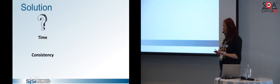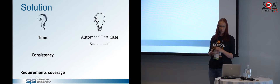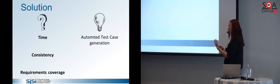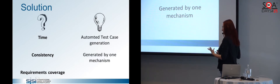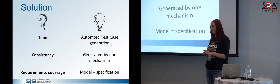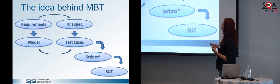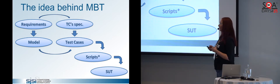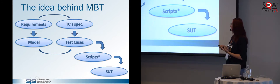How can we solve these problems? We have a time issue, a consistency issue, and a requirements coverage issue. With model-based testing the idea is to automate test case generation — generating faster than testers can manually. Since one mechanism generates all the test cases, they are consistent. In this approach, the model equals the specification, so we know what the coverage looks like. We create a model from requirements and then generate test cases from that model.